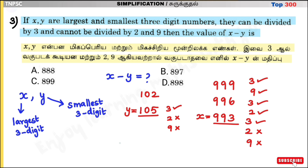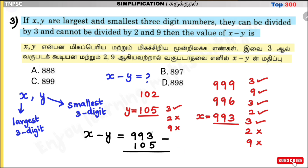So x = 993 (largest) and y = 105 (smallest). x − y = 993 − 105. 993 − 105: units 3 − 5, borrow, 13 − 5 = 8. Result is 888. Answer is Option A: 888.